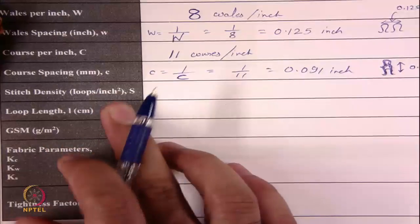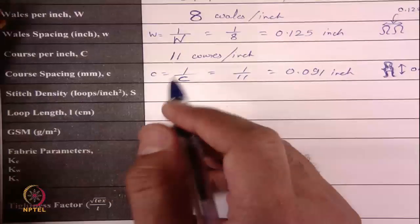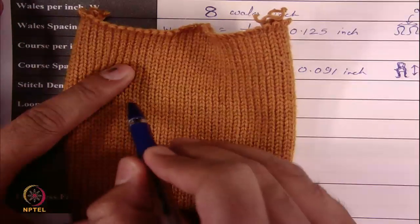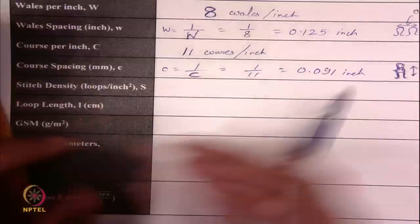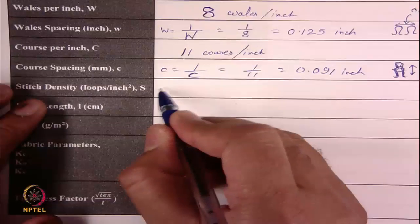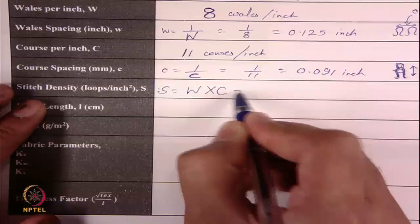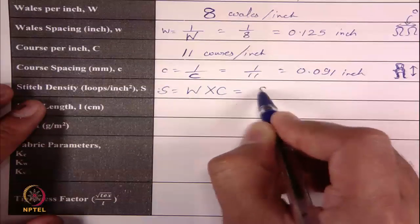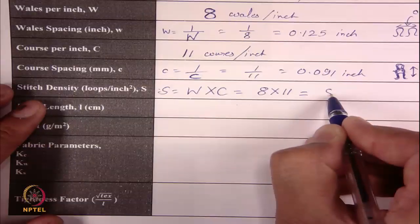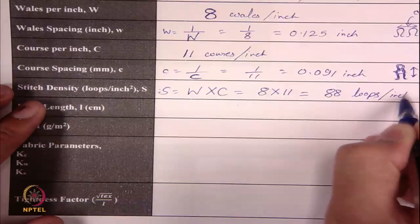Stitch density is the number of loops per inch square. The easiest way to find stitch density is to multiply wales per inch by courses per inch: 8 × 11 = 88 loops per inch square.